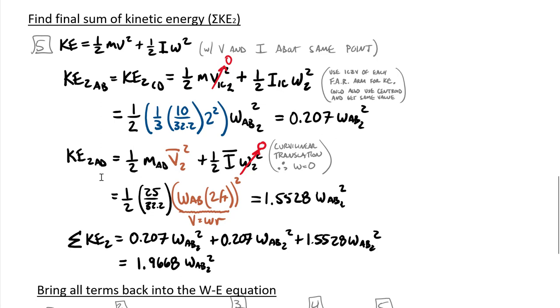For the horizontal beam, I went in and chose the centroid. It wouldn't have really mattered what point I picked because anything in translation has the same velocity for every point on that body. But it has omega of zero.